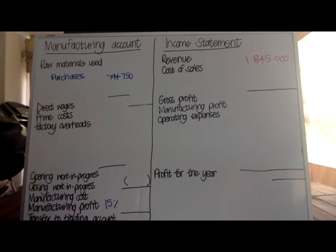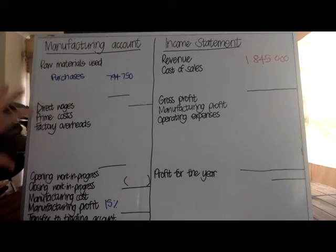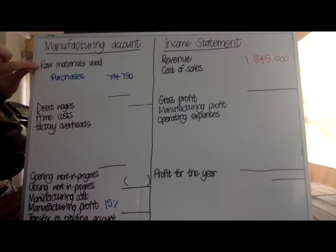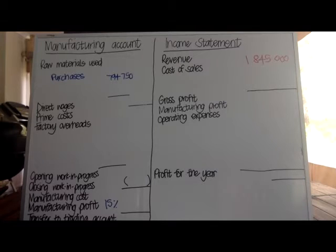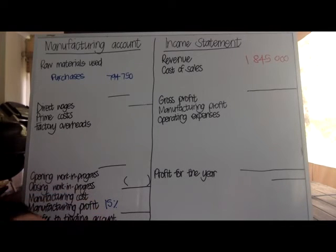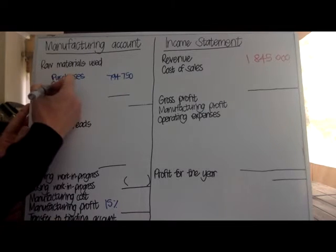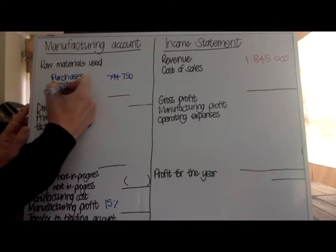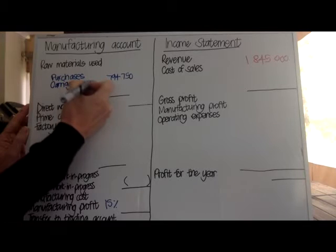Carriage inwards — remember that carriage refers to the transport of these products. I need to include it in my manufacturing account, specifically because it's carriage inwards, meaning the goods coming in to my business, i.e., raw materials. I'm going to put it here because it adds to the cost of my raw materials used.